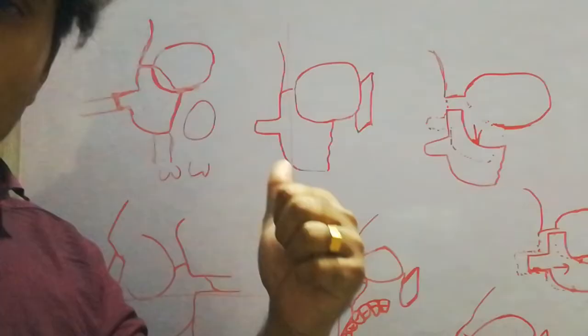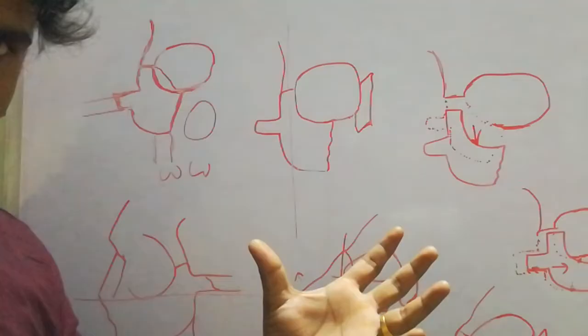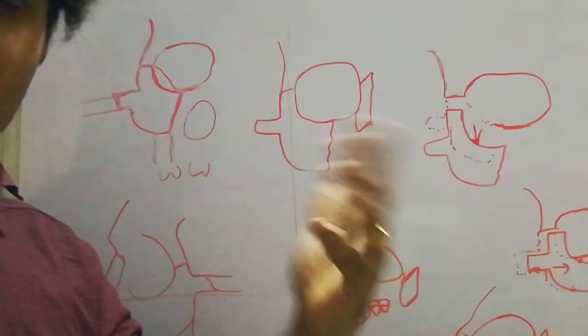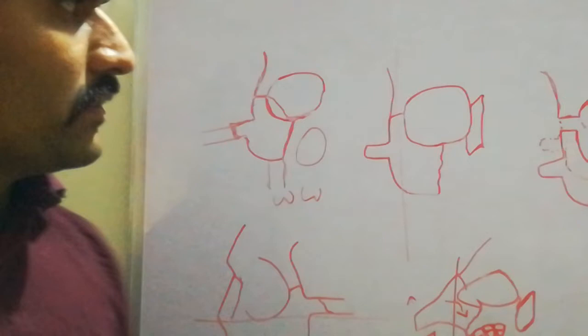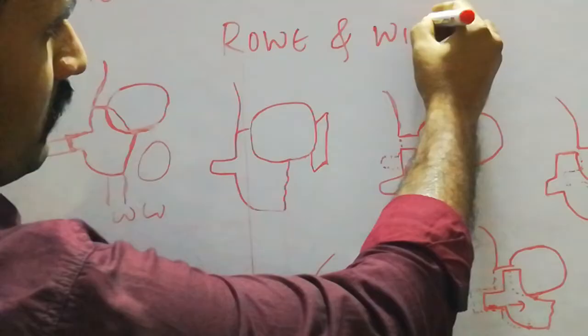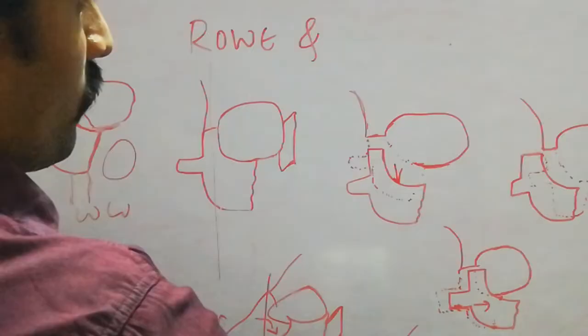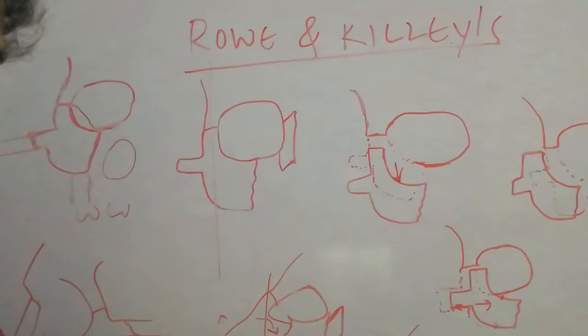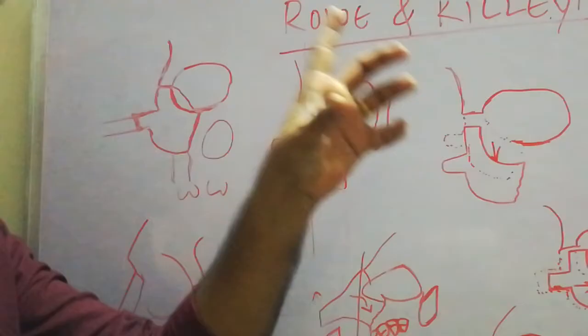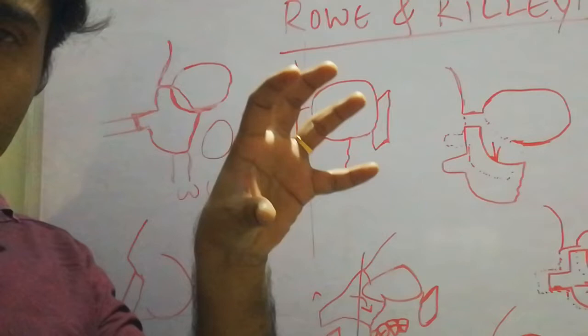Those four sites are the frontozygomatic suture, zygomatic arch, zygomatico-maxillary buttress, and inferior orbital rim. Coming to the classification of ZMC fractures — many textbooks give classifications that are not easy to write in the exam. You should write only the Rowe and Killey classification. This is the most important classification you must write in the exam, along with diagrams for each category.